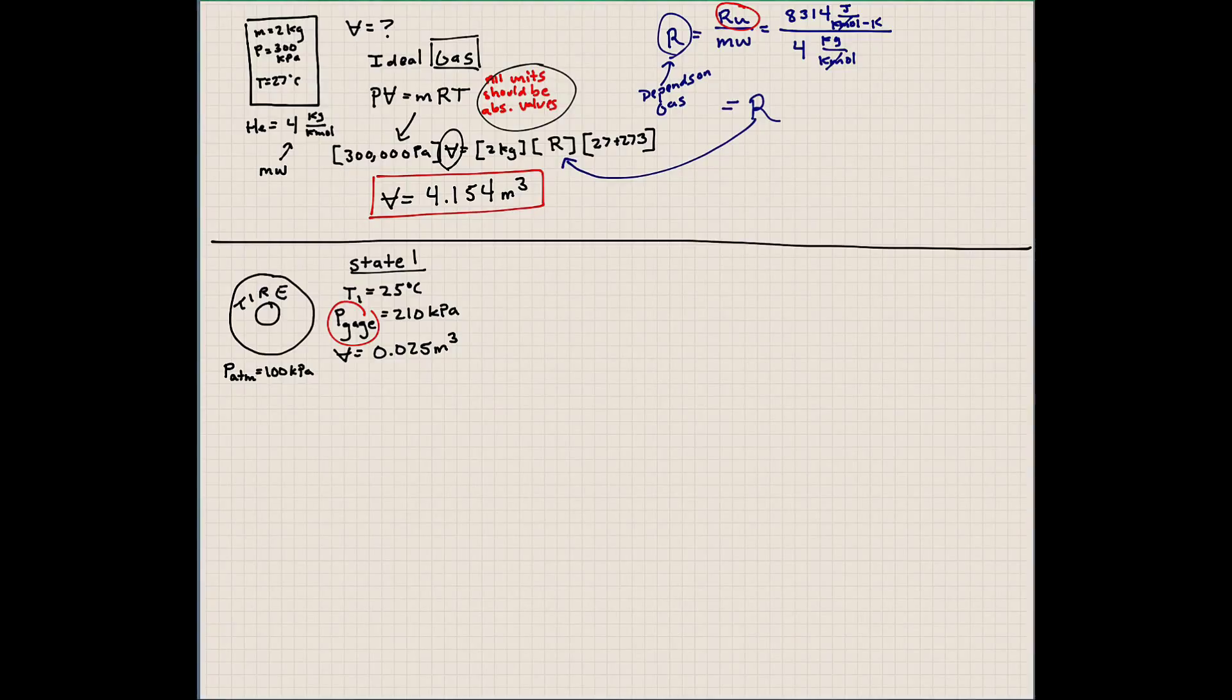In state two, the temperature rises to 50 degrees Celsius. We're going to assume here that the tire doesn't change shape, so the tire has a rigid shape. The volume at two is the same as the volume at one. What we're interested in is finding the gauge pressure. What is the gauge pressure inside the tire at state two?